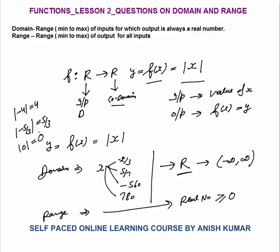So the minimum value of mod is 0 and maximum is infinity. The range equals 0 to infinity — 0 is included, so square bracket on 0. Domain of this function is the set of real numbers, minus infinity to infinity. Range is 0 to infinity. And the co-domain was given as R. So we know the co-domain, the domain, and the range.